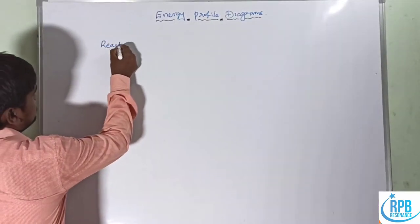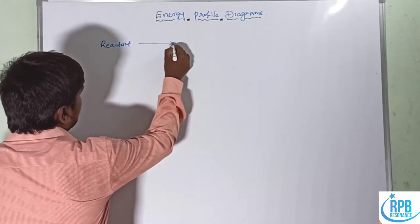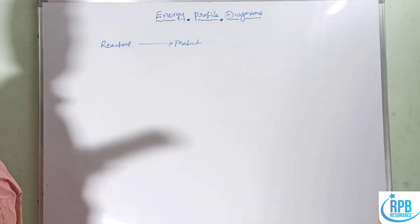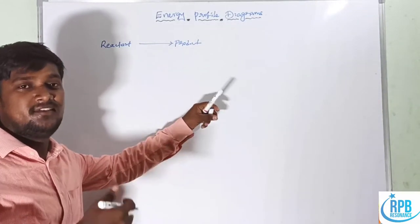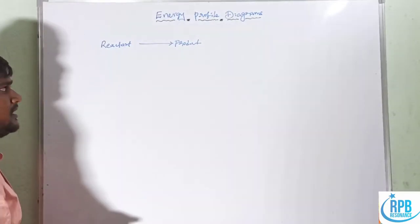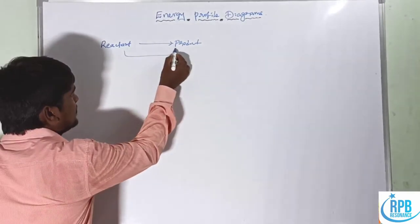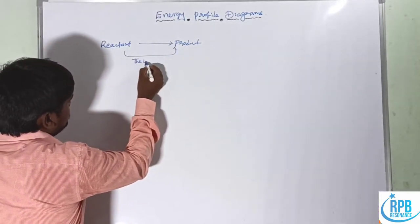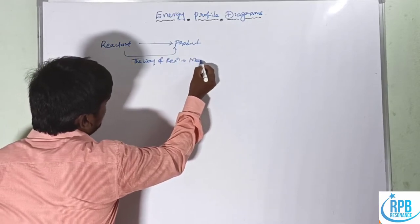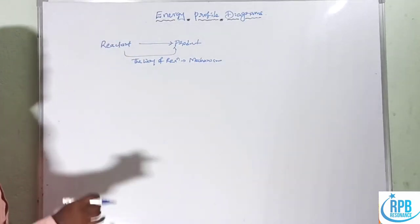Here it is the reactant. A reactant can convert into a product. The left side starting material is called reactant, and the conversion forms a new compound that is called product. The way of the reaction — the way of how the new product is formed — is called the mechanism or pathway.